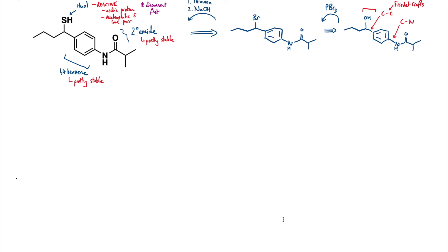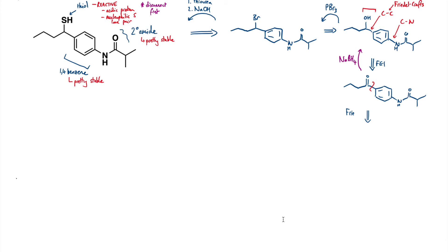I'm going to do a quick functional group interconversion to help steer me towards a Friedel-Crafts disconnection — I'll turn that alcohol into a ketone. Checking that in my forward synthesis I could go backwards: I need something that converts a ketone into an alcohol without touching the other carbonyl group. A sensible reagent for this is sodium borohydride as a nucleophilic reducing agent. This is now the perfect setup for a Friedel-Crafts type disconnection, which takes me back to butanoyl chloride — cheap and readily available.